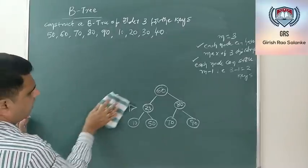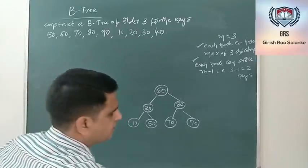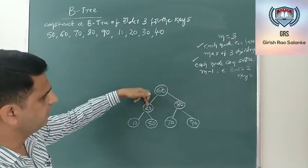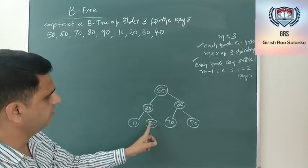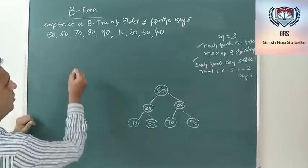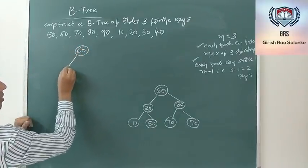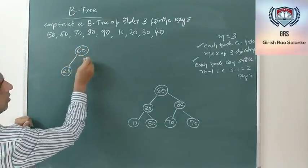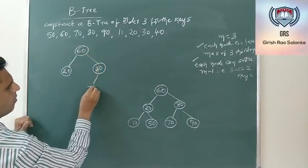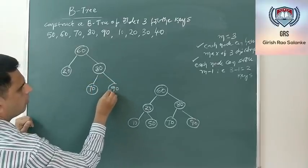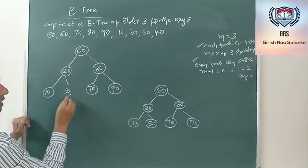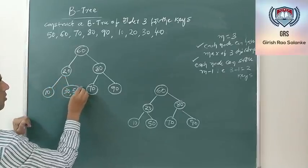Next insert 30. Compare 30 with root 60: less, go left. Compare with 20: greater, so 30 goes to the right child of 20 where 50 is stored. The node becomes [30, 50]. The tree is still valid with all leaf nodes at the same level.